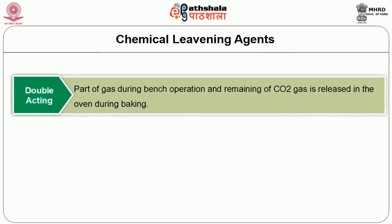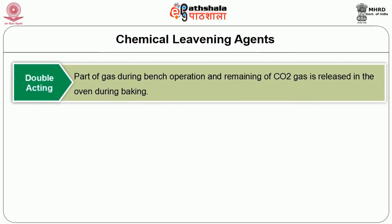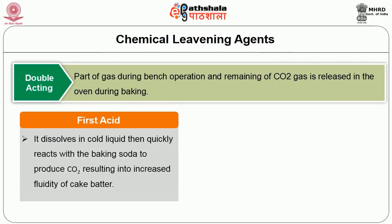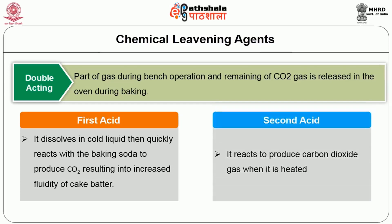Double acting baking powder is most widely used by bakers due to its added advantages. It contains two acids. The first acid dissolves in cold liquid when batter is mixed, then quickly reacts with the baking soda to produce carbon dioxide, which increases the fluidity of the cake batter and enables the baker to portion the batter into molds correctly during the weighing operation. The second acid reacts to produce carbon dioxide gas when heated during baking.